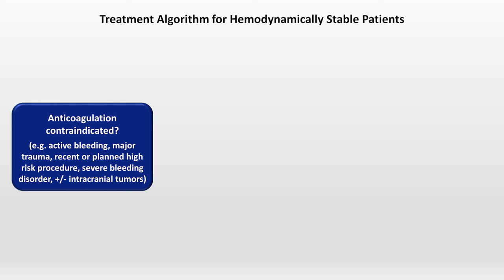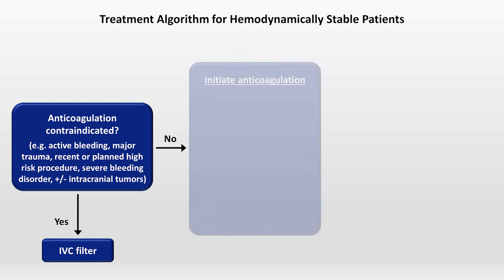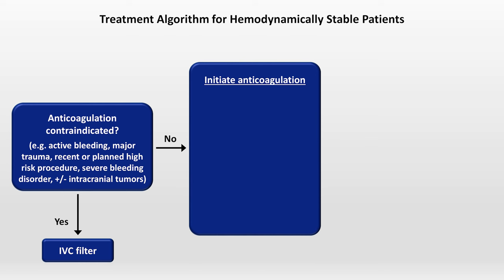If anticoagulation is not contraindicated, you should initiate anticoagulation — but which one to choose? In most patients, apixaban or rivaroxaban are the best choices. Edoxaban and dabigatran are also approved in the US for treatment of PEs, but they require overlap with a parenteral anticoagulant and offer no significant benefit over apixaban and rivaroxaban, so why use them?